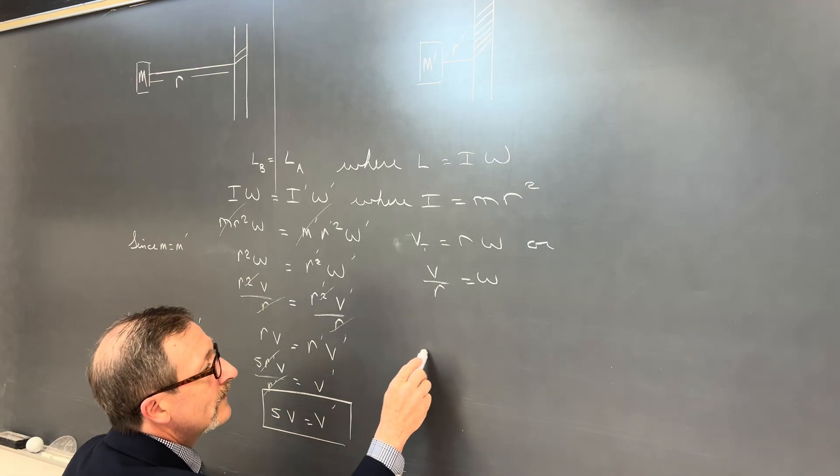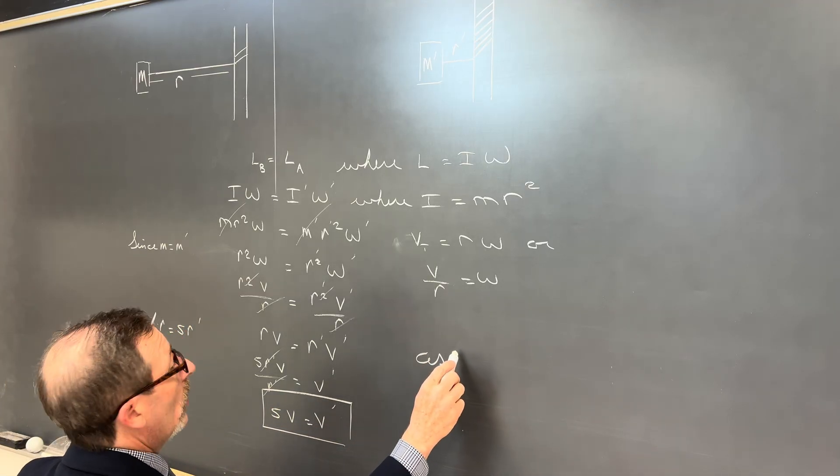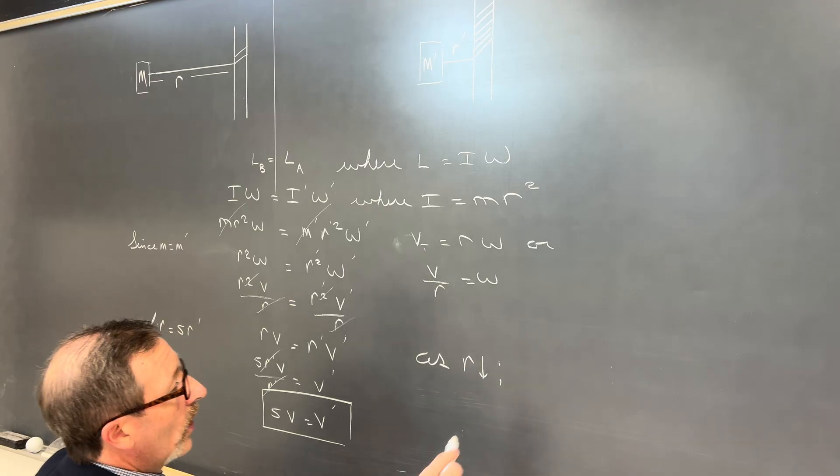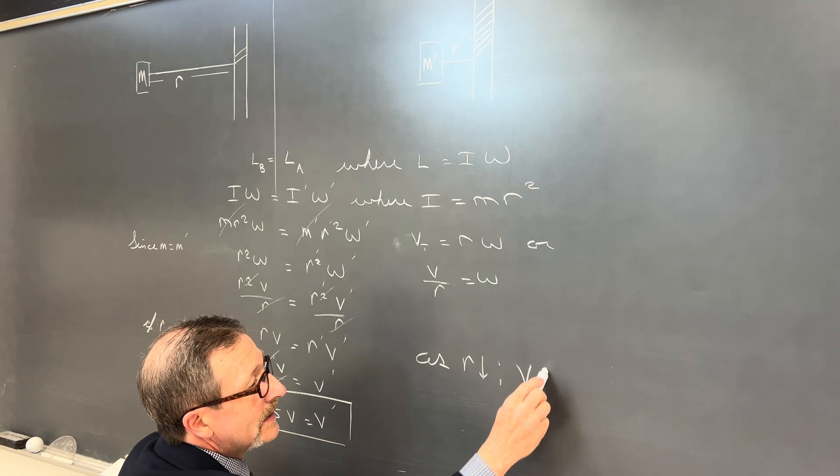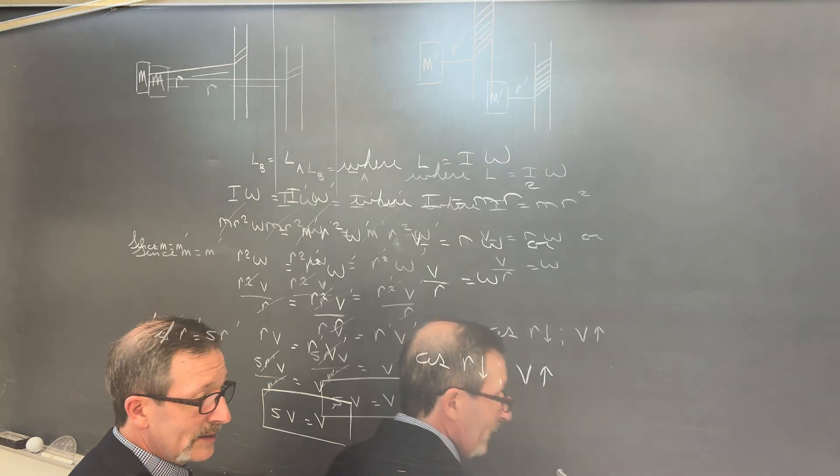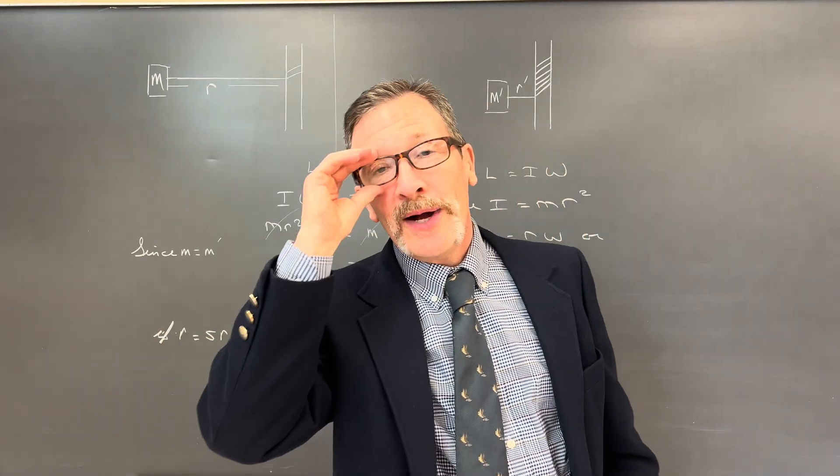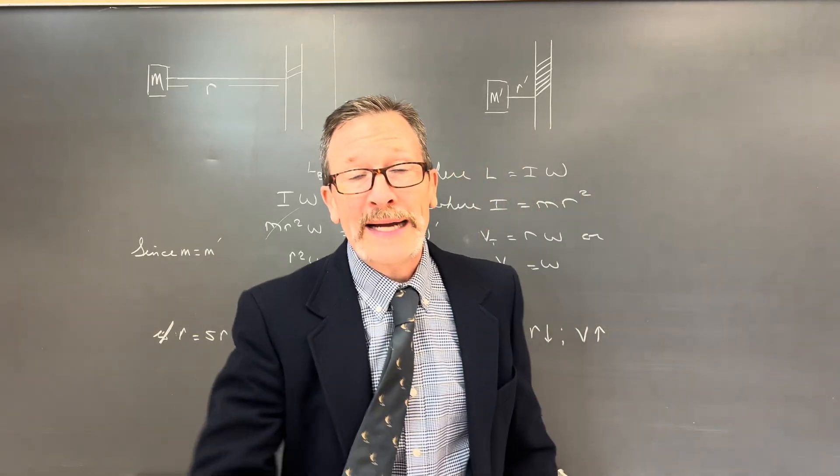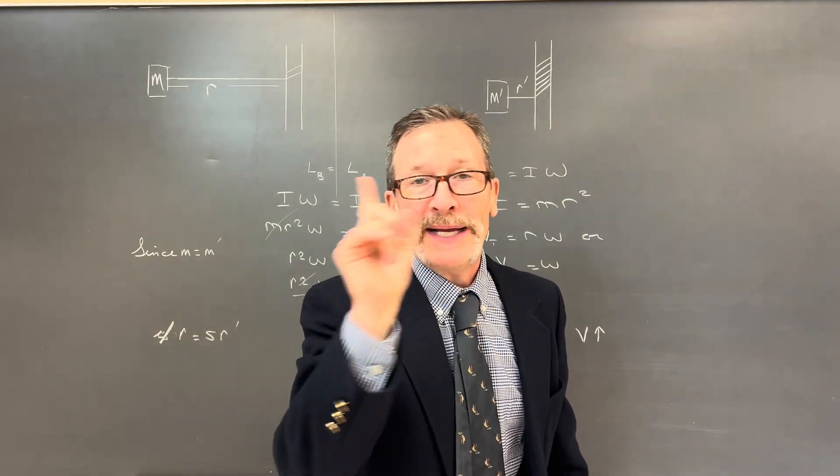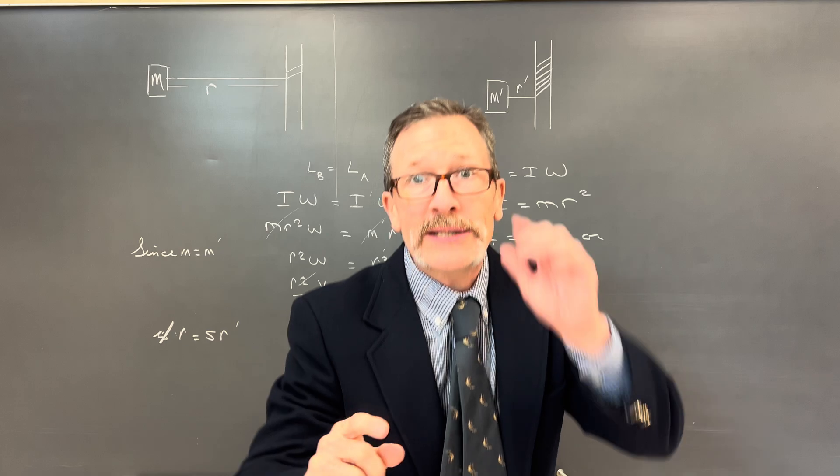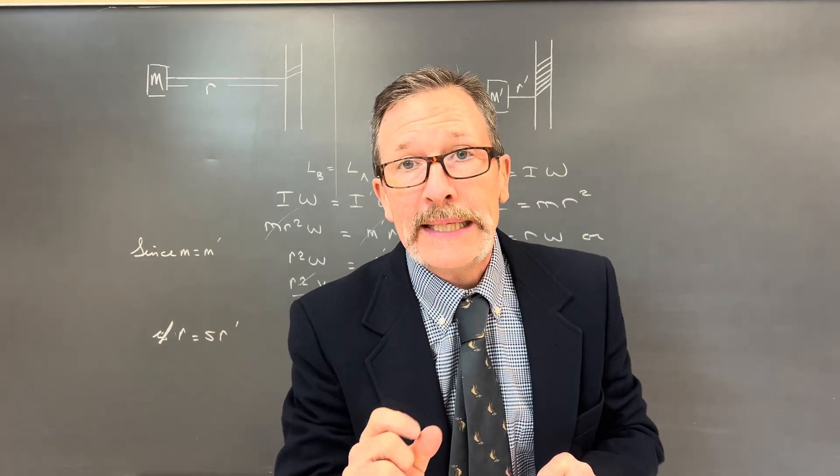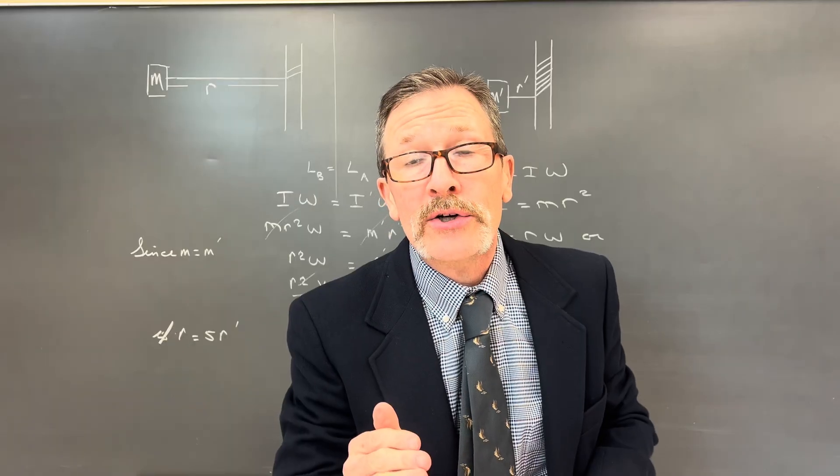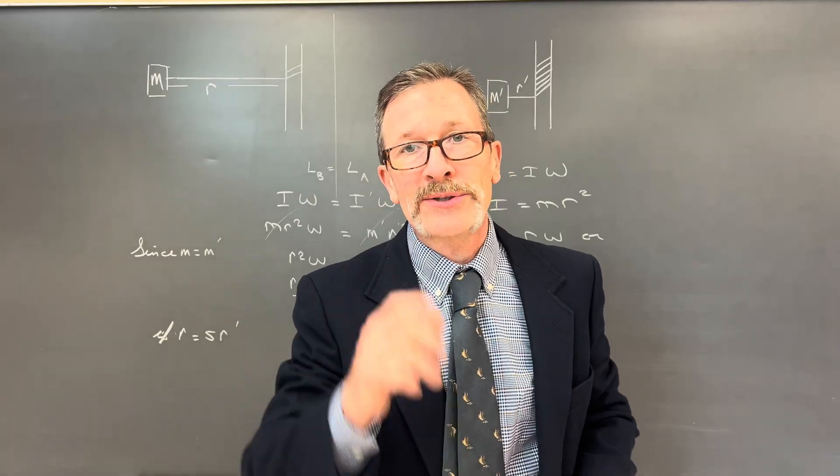In other words, as r radius decreases, velocity increases. That's a hard problem to do without using equations. But what we find out is as it spins around faster and faster and faster, even though the radius is getting smaller, it's still going in a linear direction faster and faster and faster.